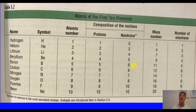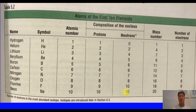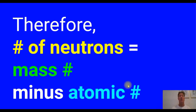The mass number is the total of protons plus neutrons. Bonus: if you're given the mass number and you already know the atomic number, you can take mass number minus atomic number — which is protons — and the remaining number must be the number of neutrons. So if fluorine has a mass of 19 and atomic number 9, it must have 10 neutrons. 19 minus 9 leaves 10 neutrons. The number of neutrons equals the mass number less the atomic number.